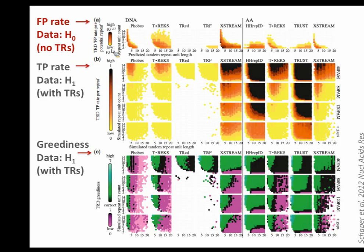Another characteristic one could evaluate is the greediness of the approach — something nobody before us had done. Typically, evaluation of predictors has been done on a binary level: yes or no, has the method detected a repeat? What we have done is look at the details: did the method detect the correct unit length? Did it detect the whole length of the region? The greediness measure tells us whether the method tends to detect tandem repeat regions that are too long or too short.